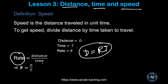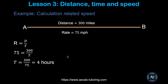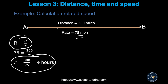Let's do a problem. Say you are driving from point A to point B, which is 300 miles apart. If you drove at 75 miles per hour, how long did it take? Write the formula: Rate equals Distance over Time. Rate is 75, distance is 300. Solving for T gives you T equals 4 hours. So if you drive 300 miles at 75 miles per hour, you need 4 hours to get there.